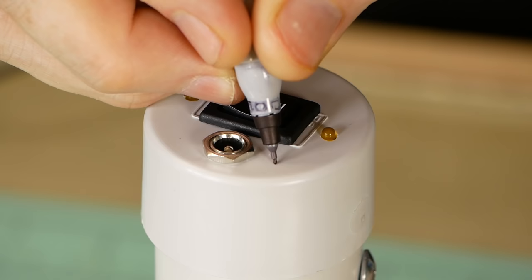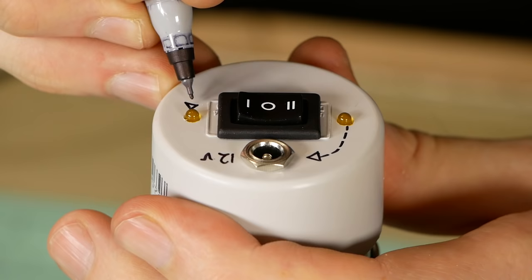One more thing you'll need to do: use a permanent marker to write on the lid so you'll know which LED indicates which power source is being used.